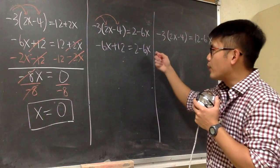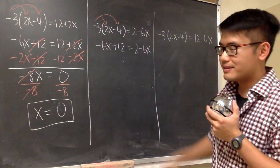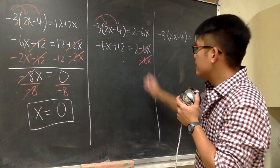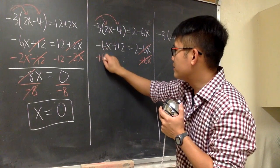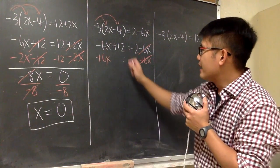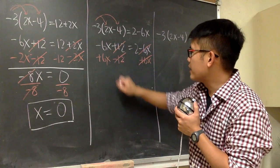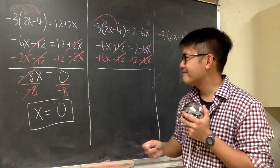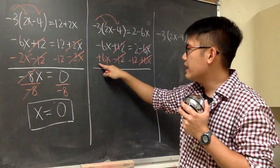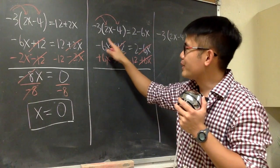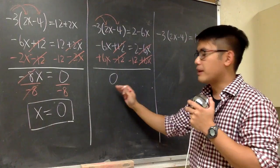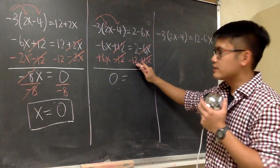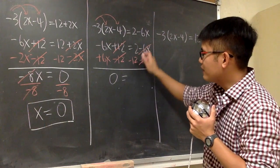Now I want to collect all the x to the left and all the numbers on the right. This is minus 6x, so I'm going to add 6x here so that they will cancel. I have to do the same thing on the left-hand side. And then this is plus 12, so let's subtract 12 here so that they will cancel, and that's minus 12 on the right. Negative 6x plus another 6x gives us 0. On the right-hand side, this is equal to 2 minus 12, which gives us negative 10.